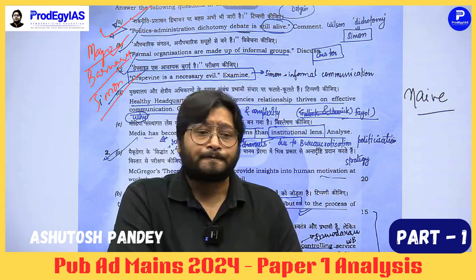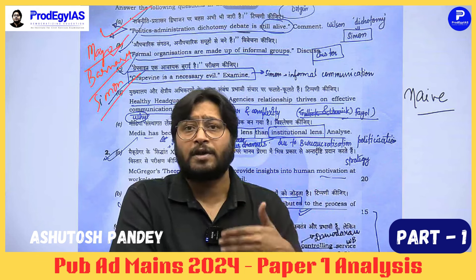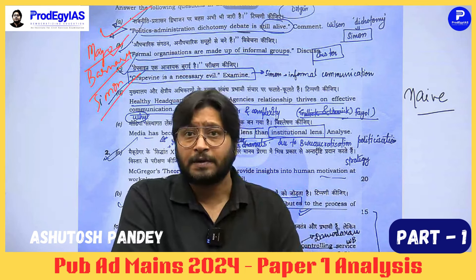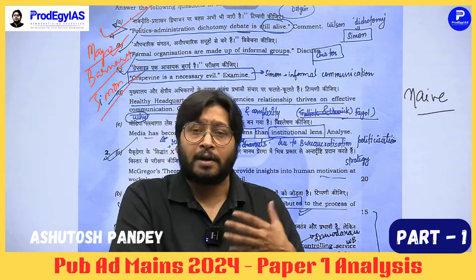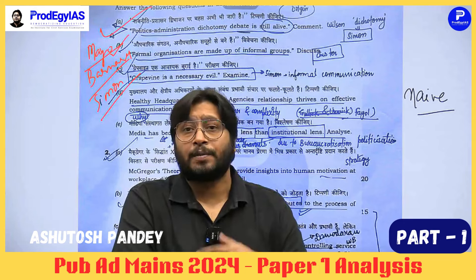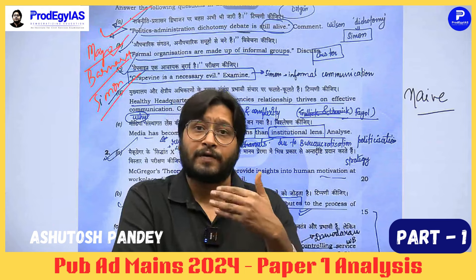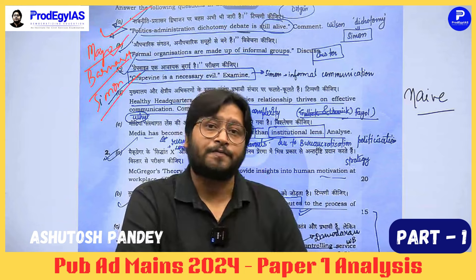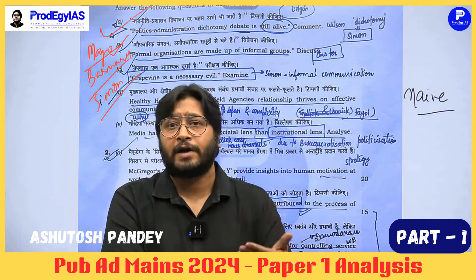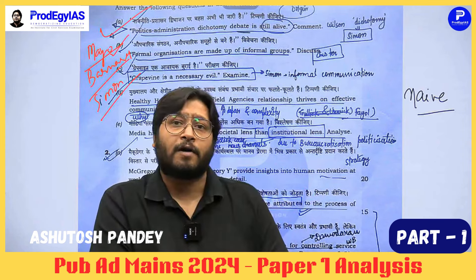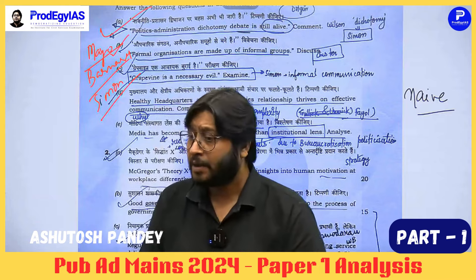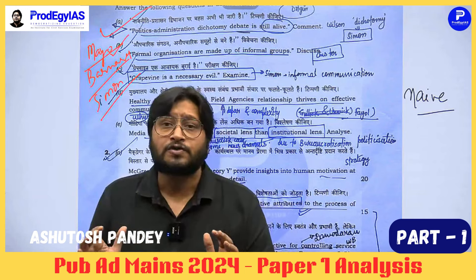Bernard says informal organizations thrive within the formal, and the informal vitalizes and reorients the formal system. Informal communication, social relations, and motivation beyond material things — through Bernard's contribution-satisfaction model and his concept of inducements and contributions — all bring together the perspective that formal and informal need not be treated as counterproductive but as complementary. This logic applies very well to lower-level and street-level bureaucracy.